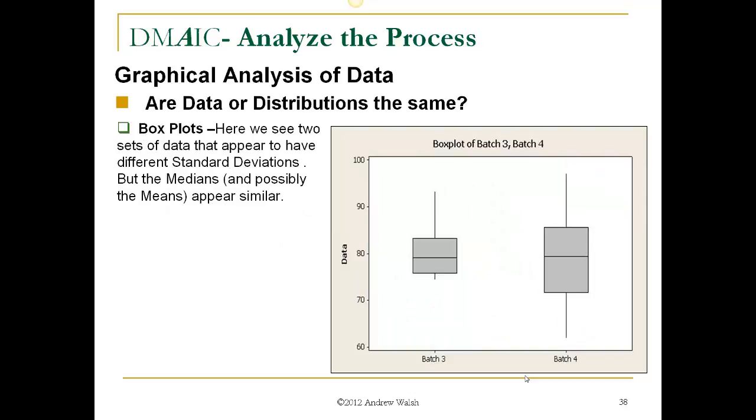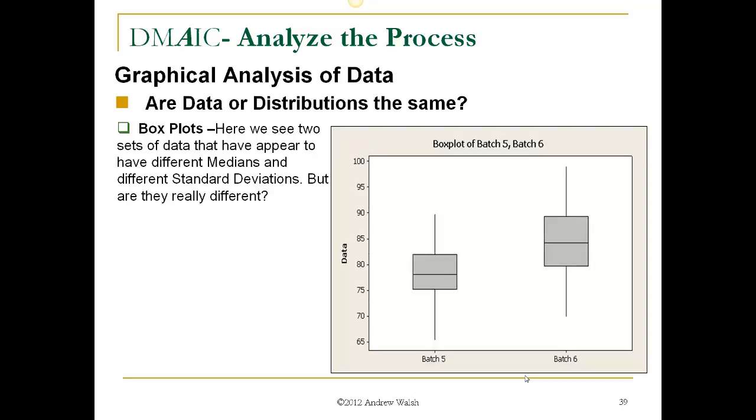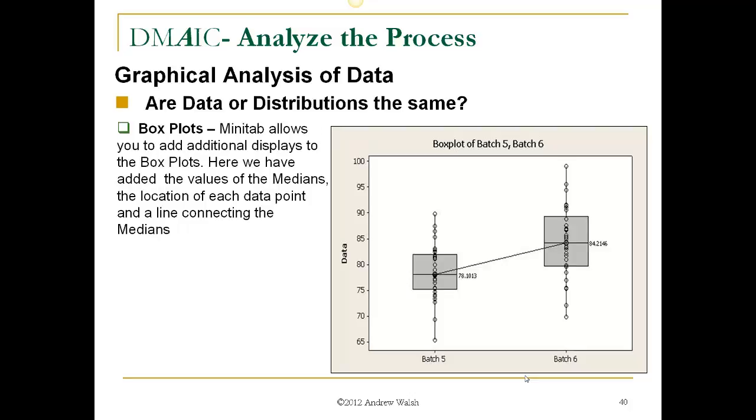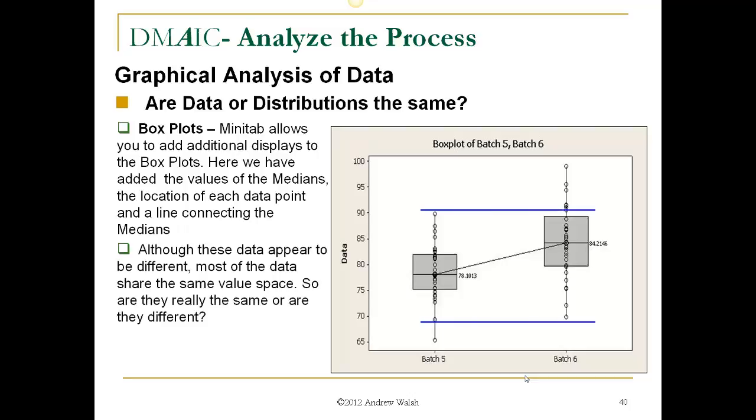Now, box plots again, here we see two sets of data that appear to have different standard deviations. And possibly means, slightly different. They appear similar. Here we see two sets of data that appear to have different medians and different standard deviations. But are they really different? Minitab allows you to add additional displays to these box plots. Here we have added the values of the medians, the locations of each data point, and a line connecting the medians. Although these data appear to be different, most of the data share the same value space. There's only a handful of data points that are not in the same value space. So are they really the same or are they different?